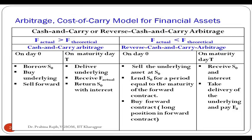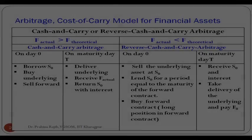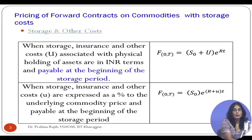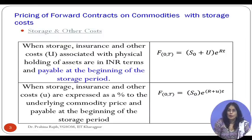This is a summarization of what we discussed in detail in the previous session. If the actual price is greater than the theoretical price, we will undertake cash and carry arbitrage. If actual price is less than the theoretical price, we will undertake the reverse cash and carry arbitrage. Now let us take an example of a commodity contract.